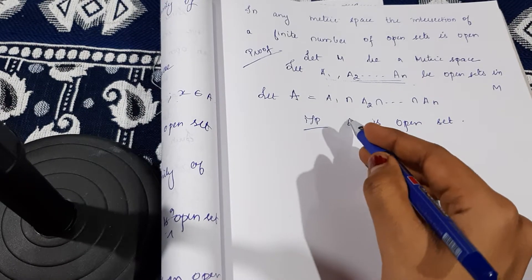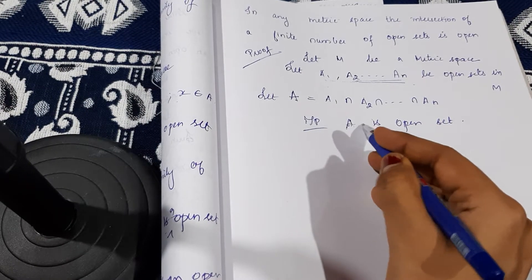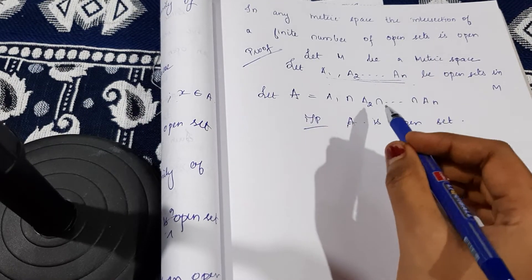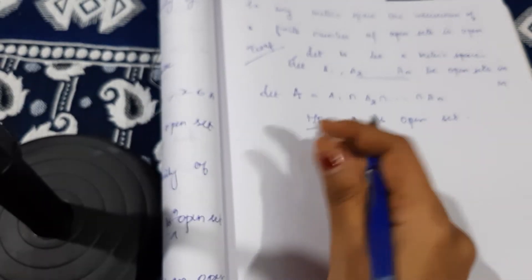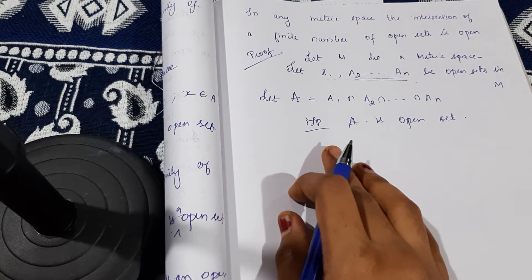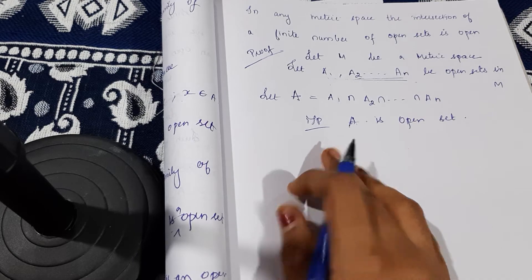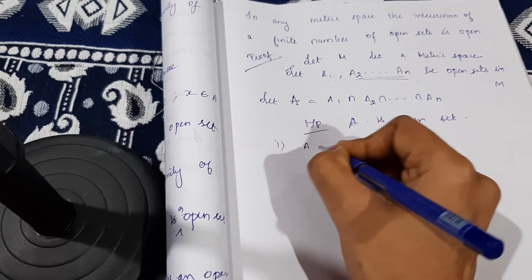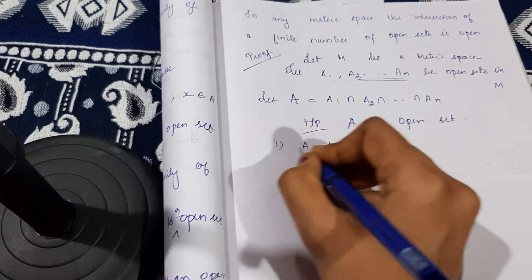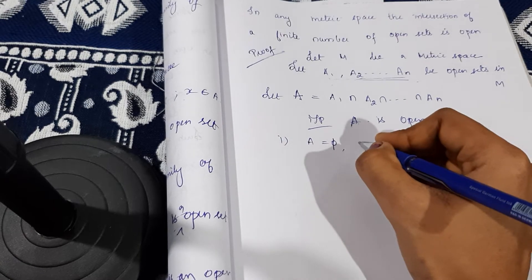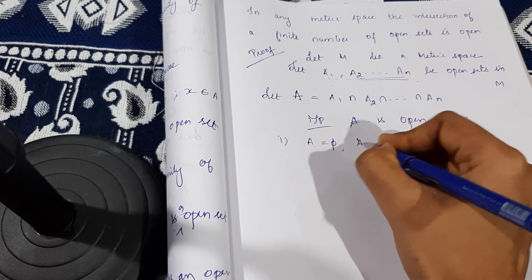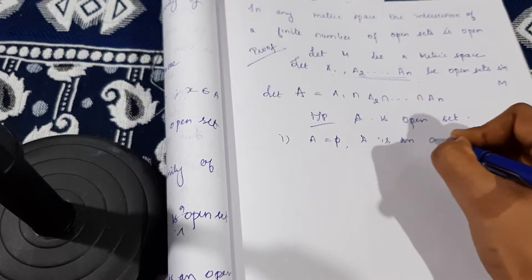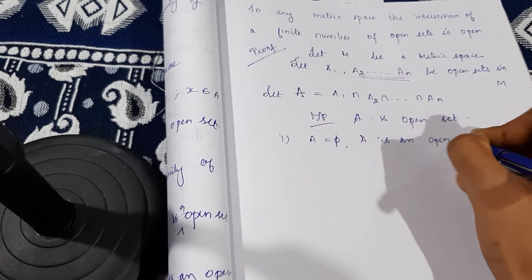To prove A is an open set, there are two cases. Case one: suppose A is the null set. If A is the null set, then obviously A is an open set — there is no need for further proof.